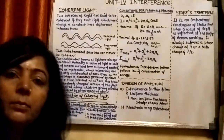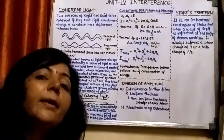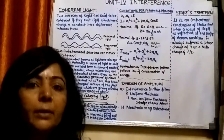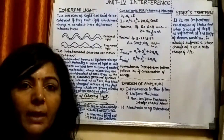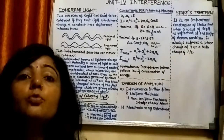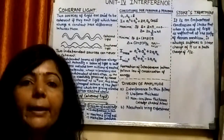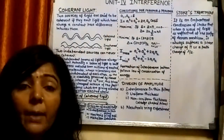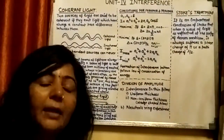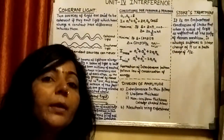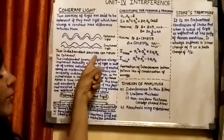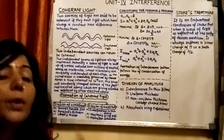Now the question arises: how can we get coherent light? If we have two independent sources — suppose two sodium lamps of similar type — these two sodium lamps will emit light radiations, but the light emitted by these two sources will not be coherent in nature. Two independent sources can never give us coherent light.